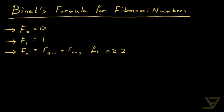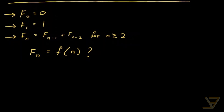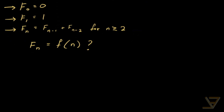Now it's natural to ask whether there exists a formula for the Fibonacci numbers, so f(n) is equal to some function applied to the integer n, and we're going to be finding such a formula today. As you'll see near the end, it's a very surprising formula — it doesn't even look like it outputs integers for the most part. We're going to be using a technique called generating functions.